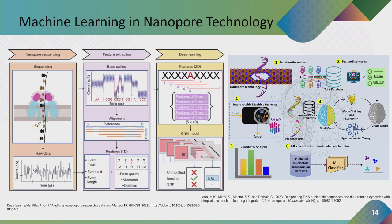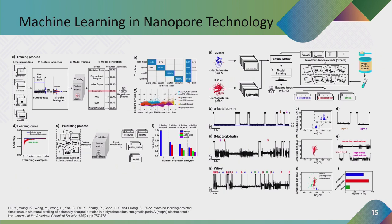Different labs have started integrating machine learning with nanopore technology from 2020 onward. Some labs are extracting different features and using them in deep learning models like CNN to predict different SNPs, nucleosides, or other modifications in RNA molecules. Another lab dealing with proteins of different surface charges has developed a machine learning algorithm that can predict complex protein samples with 99.9 percent accuracy.